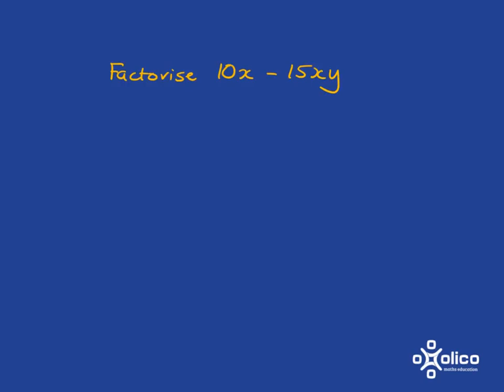If you are asked to factorise 10x minus 15xy, again what you've got to look for is the biggest thing that will divide into 10x as well as into minus 15xy. Number-wise, it's fairly easy. 5 divides into 10 and also into 15, but in this case you also have an x that can divide into 10x as well as into 15xy.